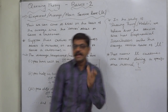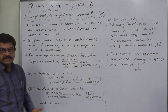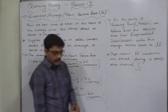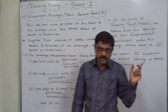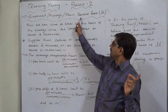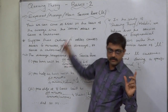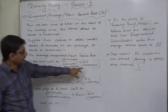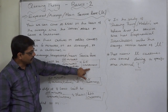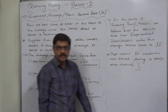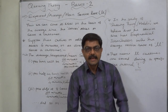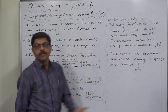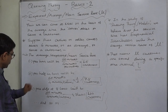Remember the previous lecture — Basics 1 — on arrival rate. The rate of arrival was 12, and the rate of service here is 15. So the capacity is more than the actual workload, and that is the ideal situation.